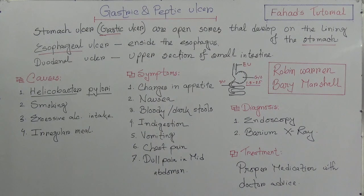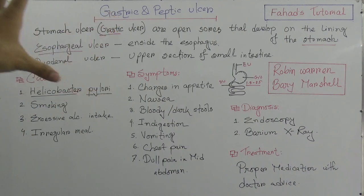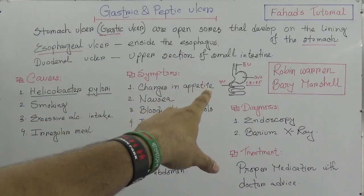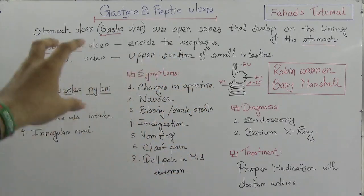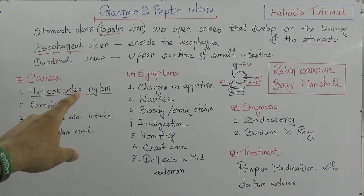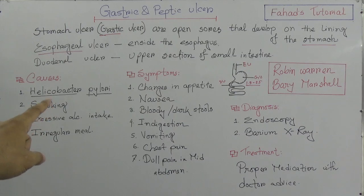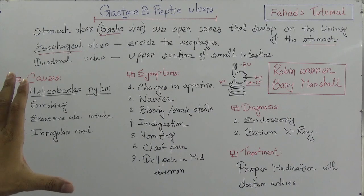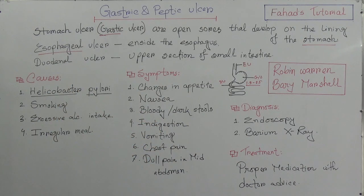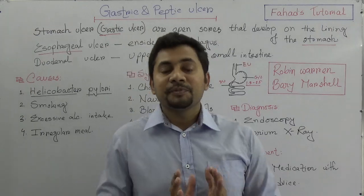To wrap up: peptic ulcer is divided into three parts based on placement — esophageal, gastric, and duodenal ulcer. Causes include Helicobacter pylori, smoking, excessive alcohol intake, and irregular meals. Symptoms include changes in appetite, nausea, bloody or dark stools, indigestion, vomiting, chest pain, and dull pain in the mid-abdomen. For diagnosis, endoscopy and barium X-ray are used, and treatment involves proper medication with doctor's advice.